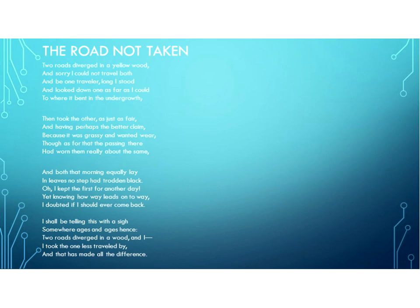I shall be telling this with a sigh somewhere ages and ages hence. So now he's talking about the future — someday he's going to tell this story, and when he does he's going to sigh. That's a third place we might need to interpret, but we're not going to right now. We might want to find out why he's sighing or what that sigh means. And this is the story he'll tell in the future: Two roads diverged in a wood, and I — I took the one less traveled by, and that has made all the difference. So now we've read the poem in the first sense, going through the text; we've read it in the second sense, understanding the superficial meaning of the sentences — what the words are saying. Now we're going to put it all together and come to an interpretation of the poem.